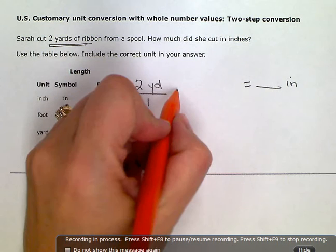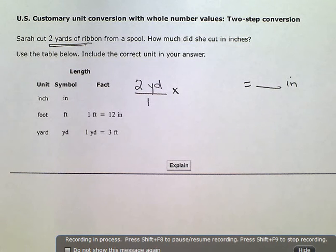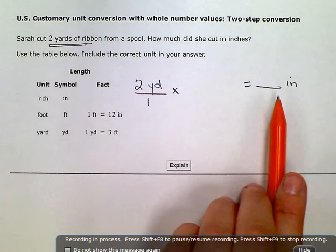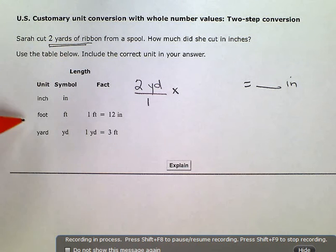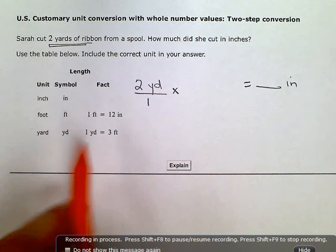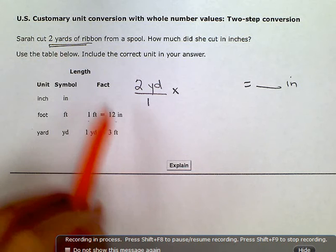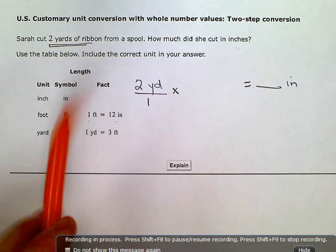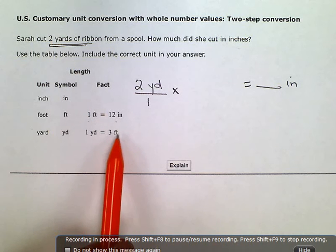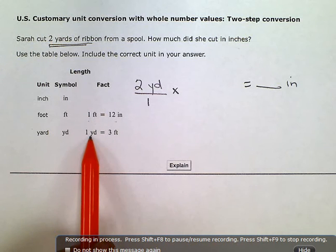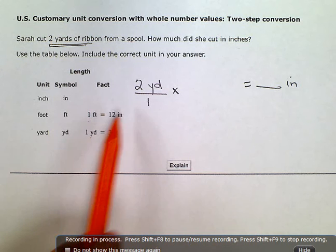I need to multiply by a conversion ratio here to convert this two yards into inches. But if I look at my chart here, I don't have a conversion statement or an equality statement here that directly relates yards to inches. I have inches to feet and feet to yards, but nothing that directly relates inches to yards.